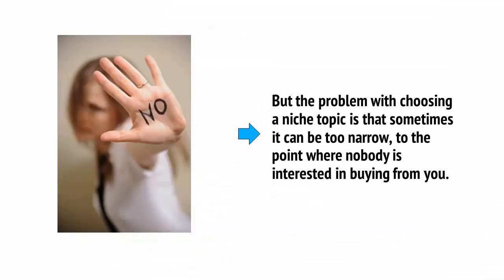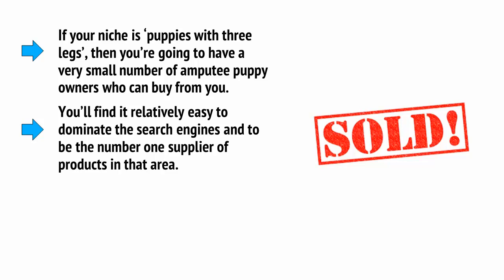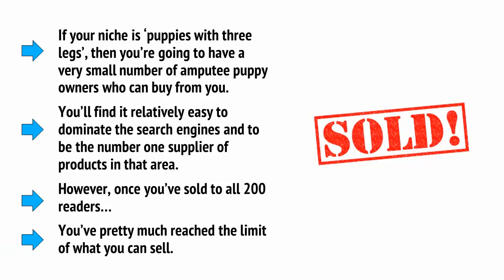But the problem with choosing a niche topic is that sometimes it can be too narrow, to the point where no one is interested in buying from you. If your niche is puppies with three legs, then you're going to have a very small number of amputee puppy owners who can buy from you. You'll find it relatively easy to dominate the search engines and to be the number one supplier of products in that area. However, once you've sold to all 200 readers, you've pretty much reached the limit of what you can sell.